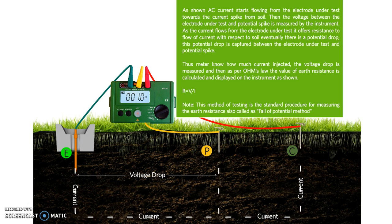As per Ohm's law, the meter calculates the value of resistance by the formula R is equal to V by I. This method of measuring the earth resistance is the standard method and is called the fall of potential method.